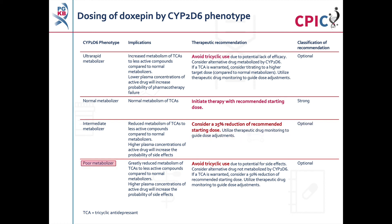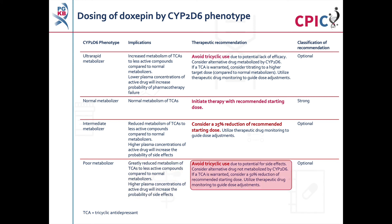Patients with a CYP2D6 poor metabolizer phenotype will have greatly reduced metabolism of TCAs to less active compounds. Use of TCAs should be avoided in these patients. If use of a TCA is warranted, a 50% reduction in the recommended starting dose should be considered. This is an optional recommendation.